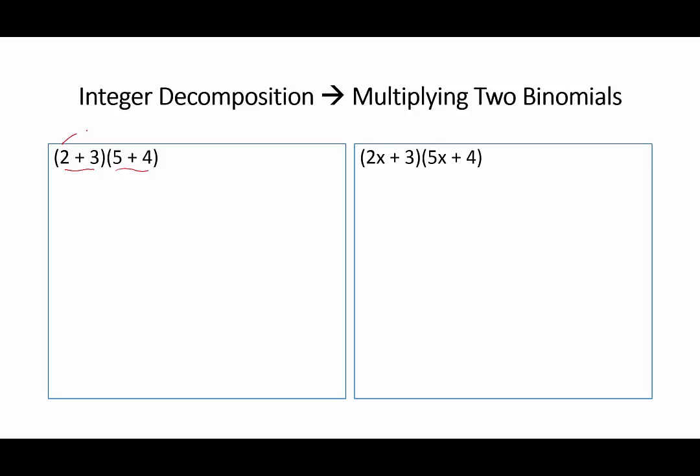If we multiply 2 times 5, and we add to that 2 times 4, and we add to that 3 times 5,